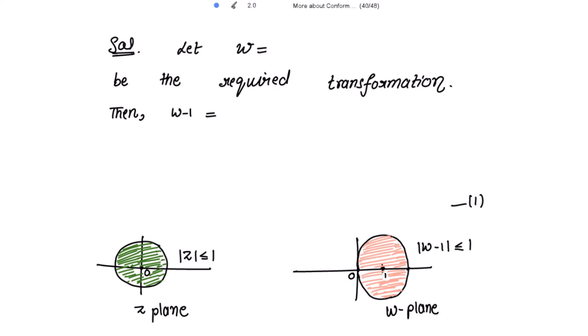To start with the solution, let's take w to be our original transformation, that is w = (az + b)/(cz + d), with the very important condition that ad - bc ≠ 0. Let this be the required transformation.